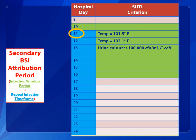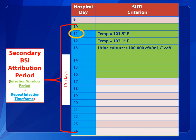Let's look at this symptomatic UTI, or SUTI, example. The date of event for this SUTI is hospital day 11. The secondary BSI attribution period encompasses both the infection window period and the RIT. In this example, the BSI attribution period is 15 days in length — this includes the 14 days of the RIT and one additional day of the infection window period. The length of the secondary BSI attribution period depends on the date of event, but is never greater than 17 days.